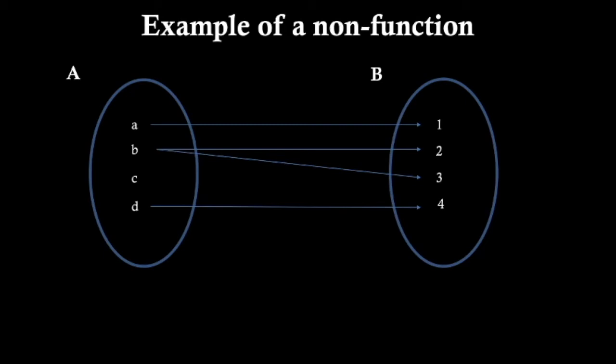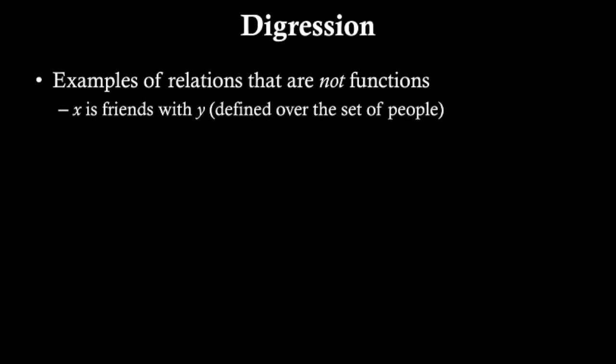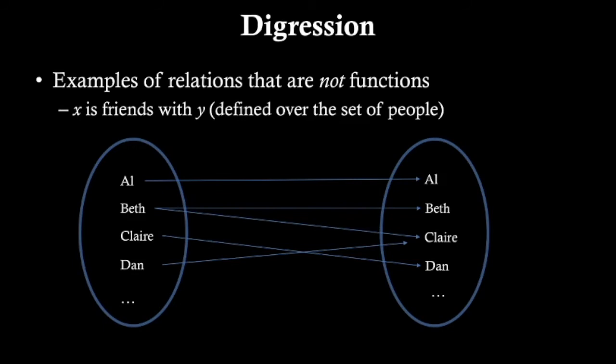We can't have two arrows coming out of the same source. The essence of a function is that to each input, there corresponds at most one output. Knowing the input, you already know the output. Here are some concrete examples of relations that are non-functions.